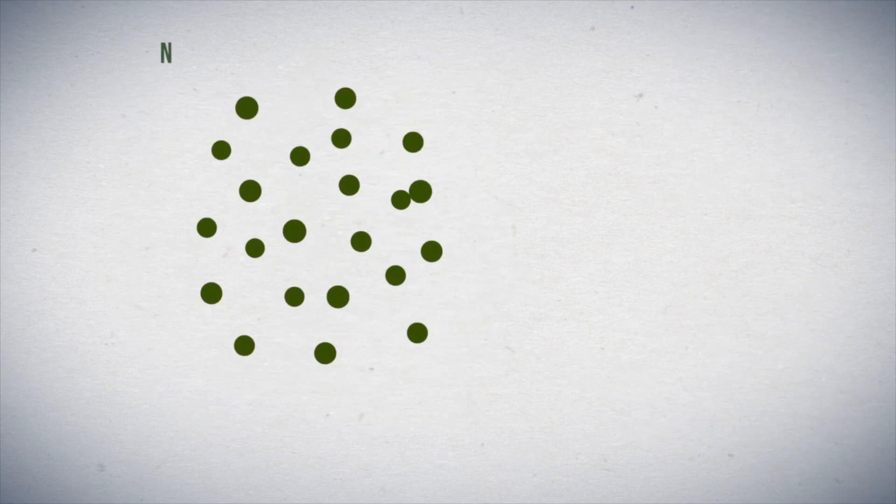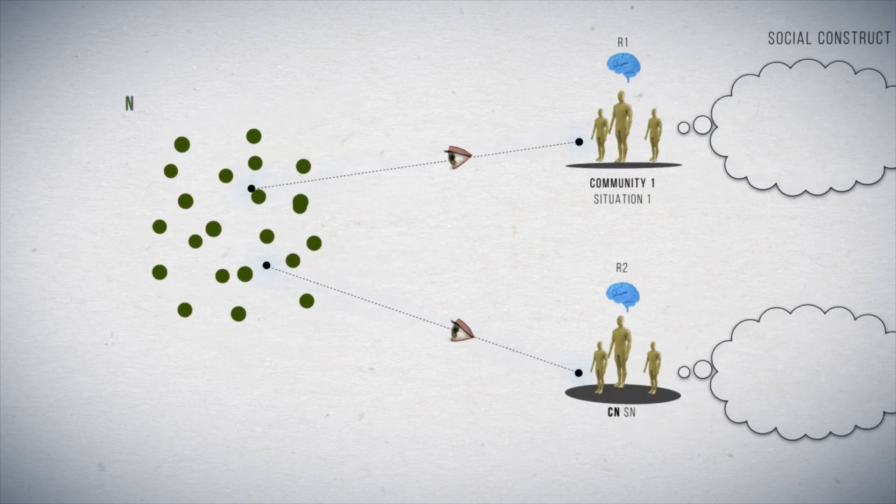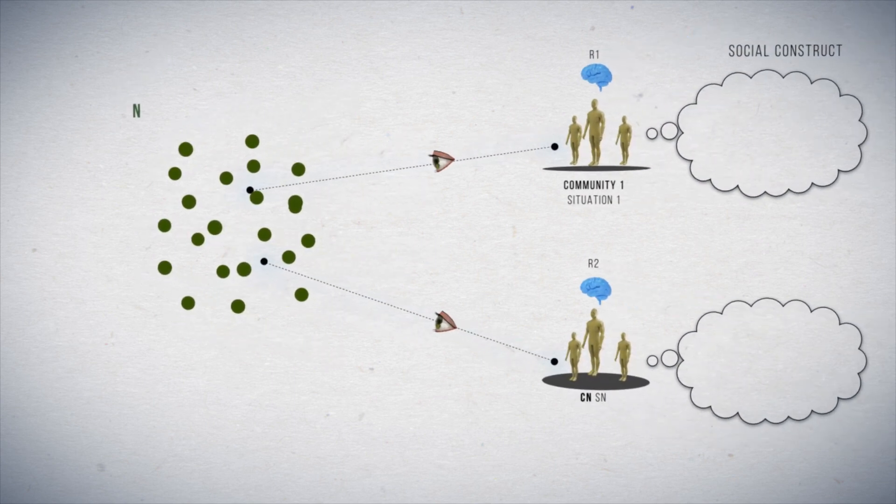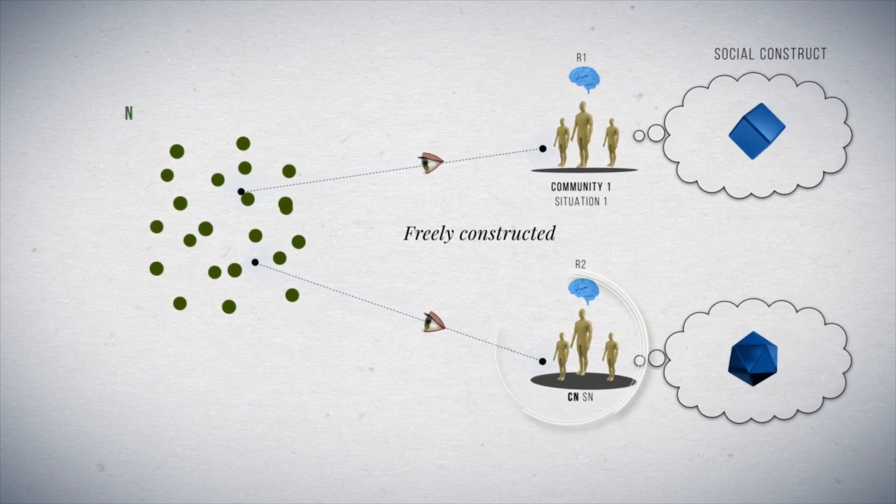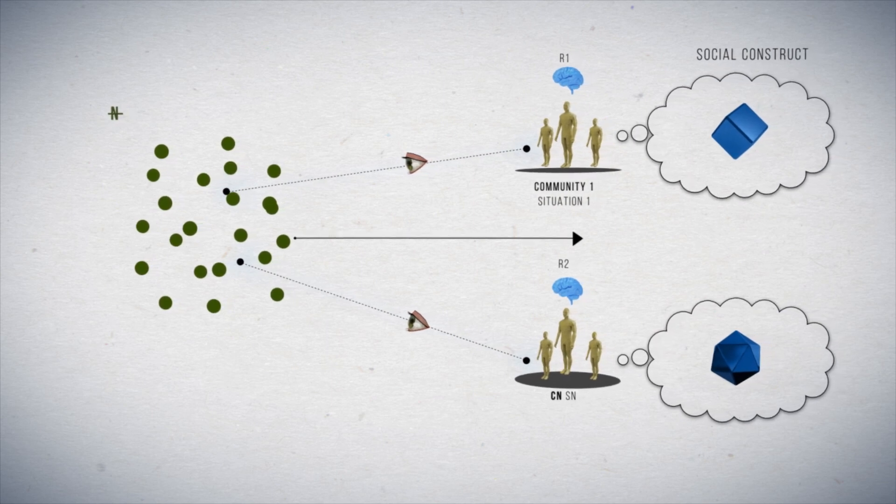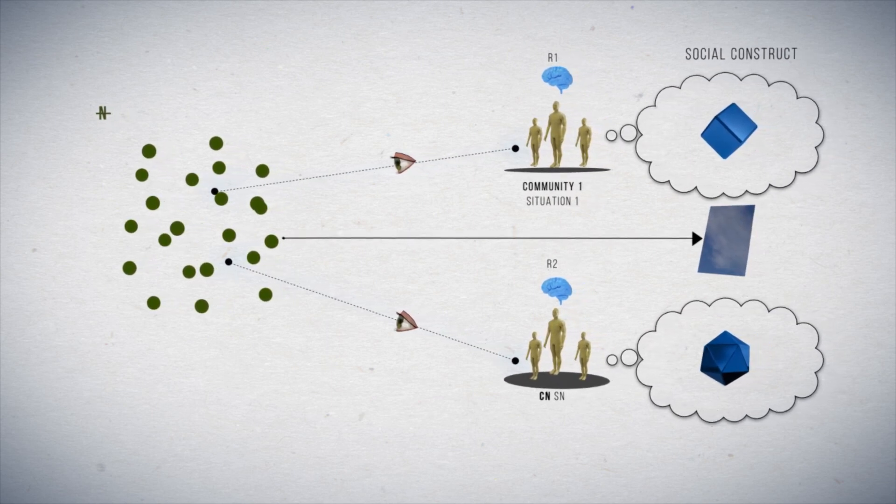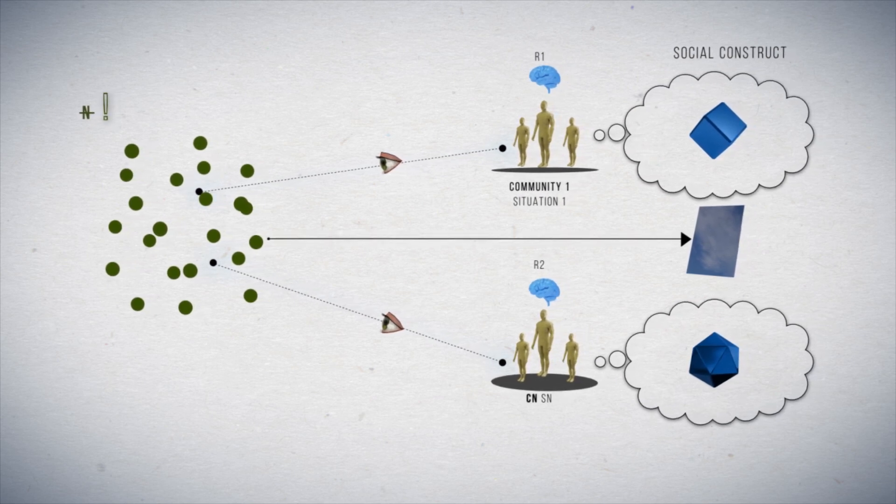Therefore, nature, as a set of entities, was considered a social construct, its specific form being freely built by each community, and not objectively given to the senses and mirrored by them. This was the answer of postmodernism to the ontological question about nature.